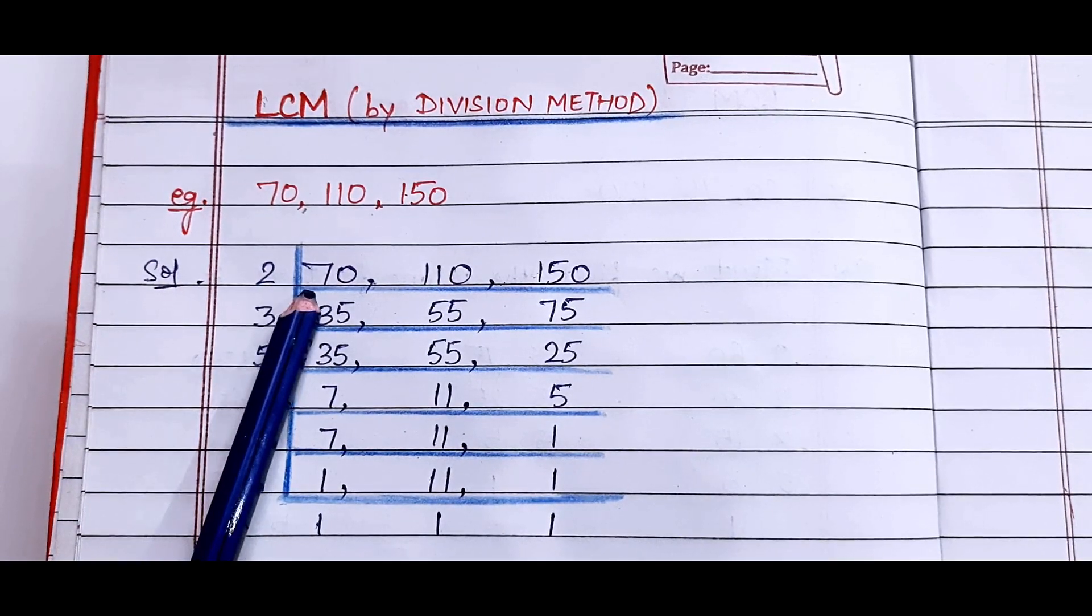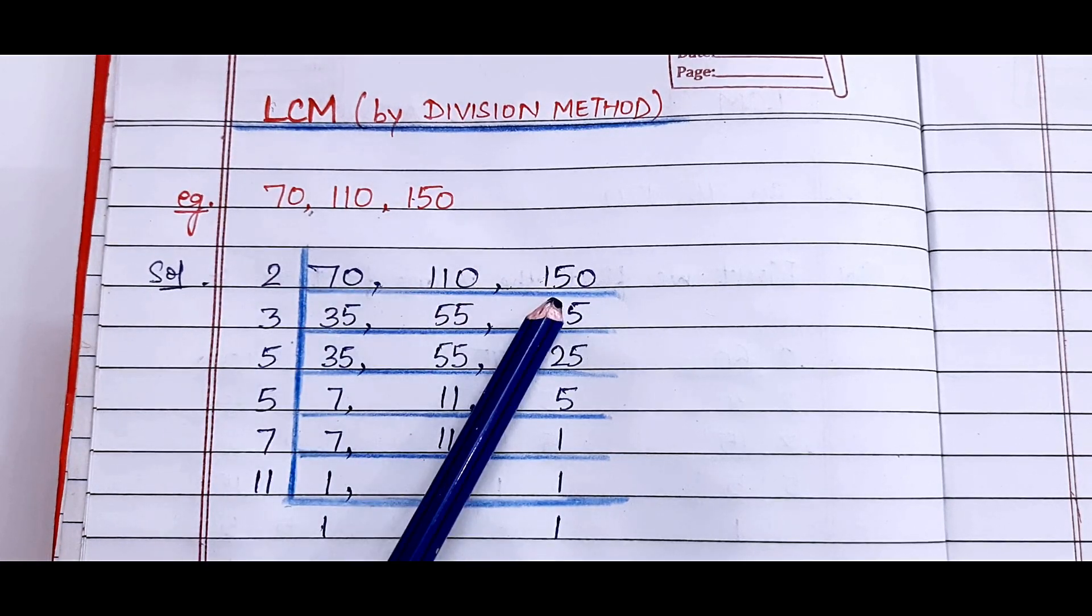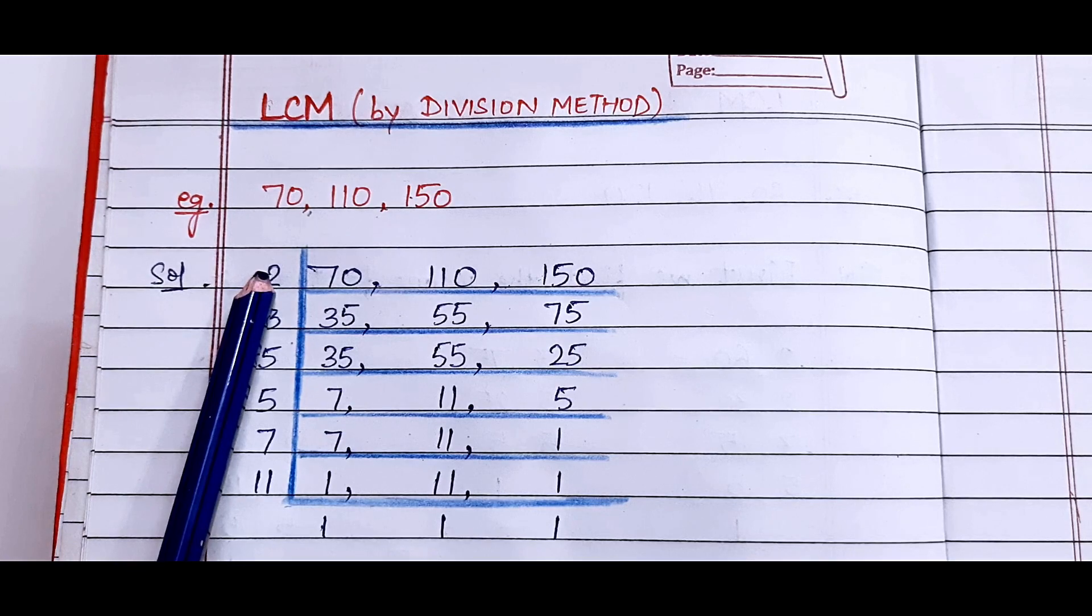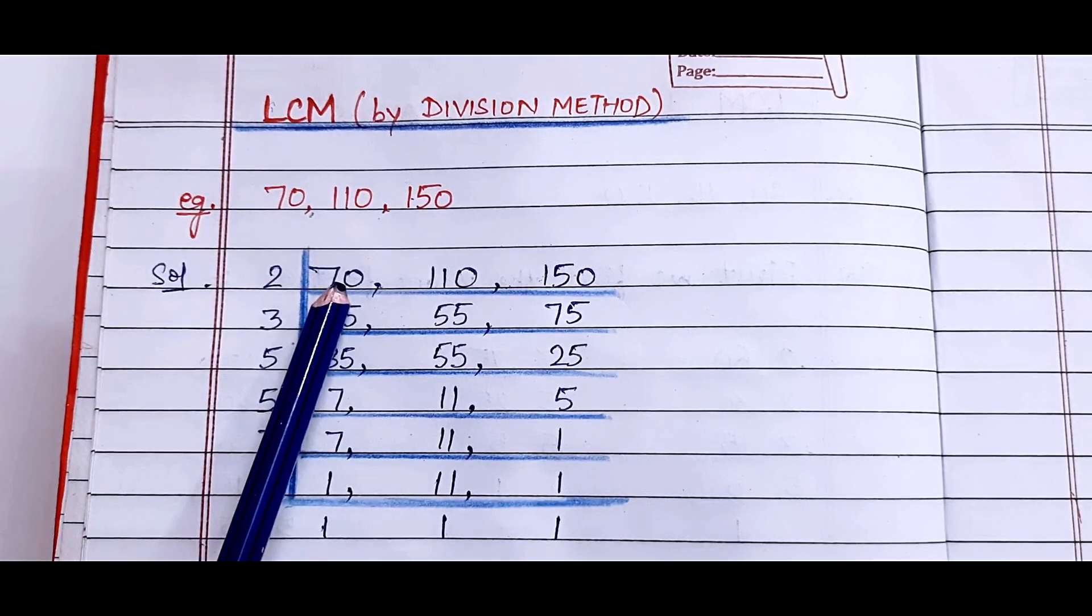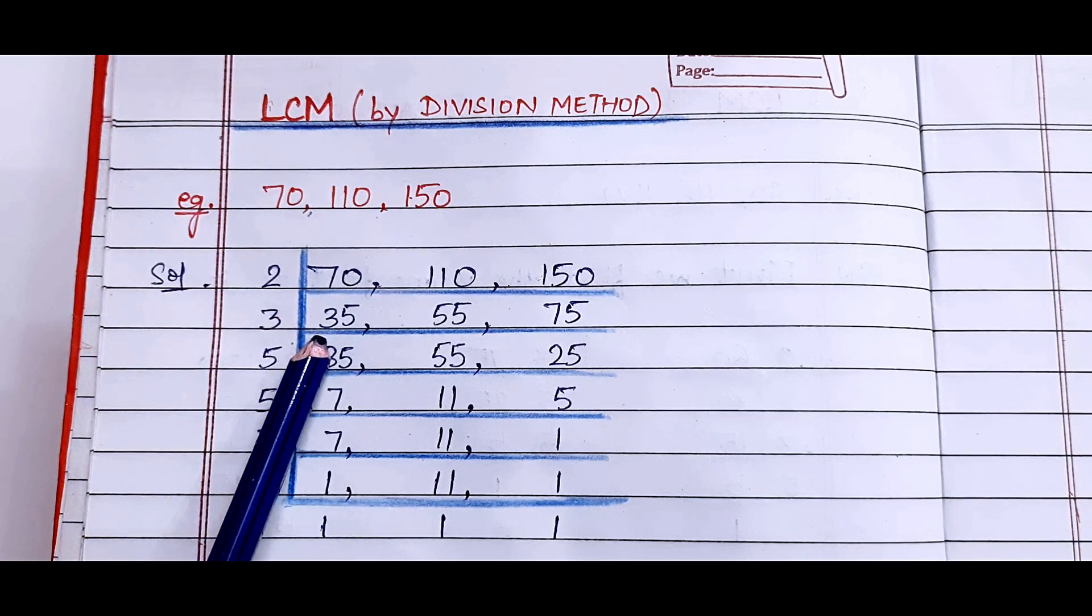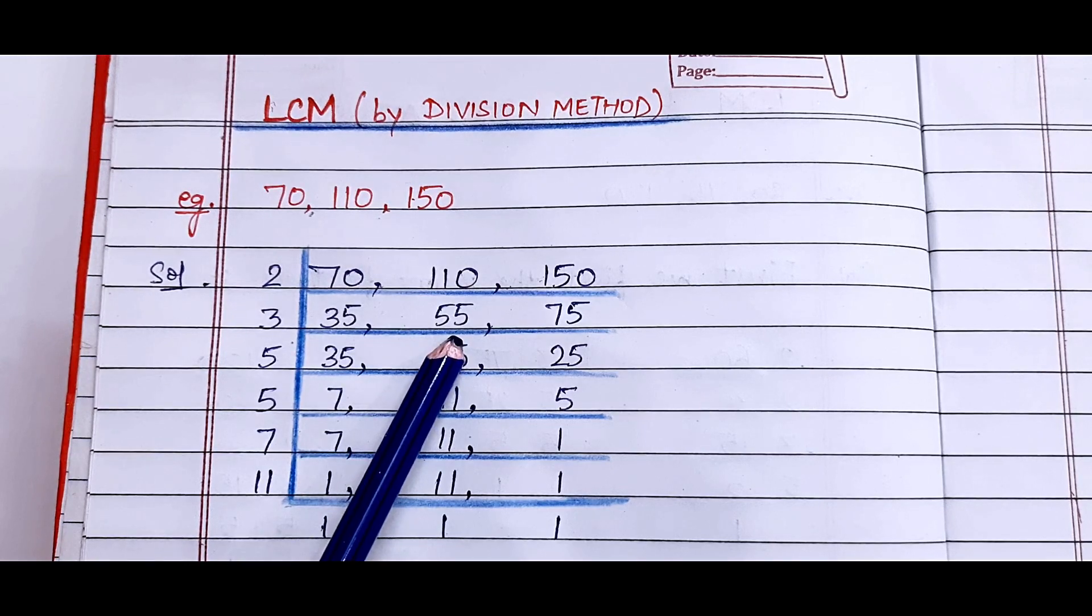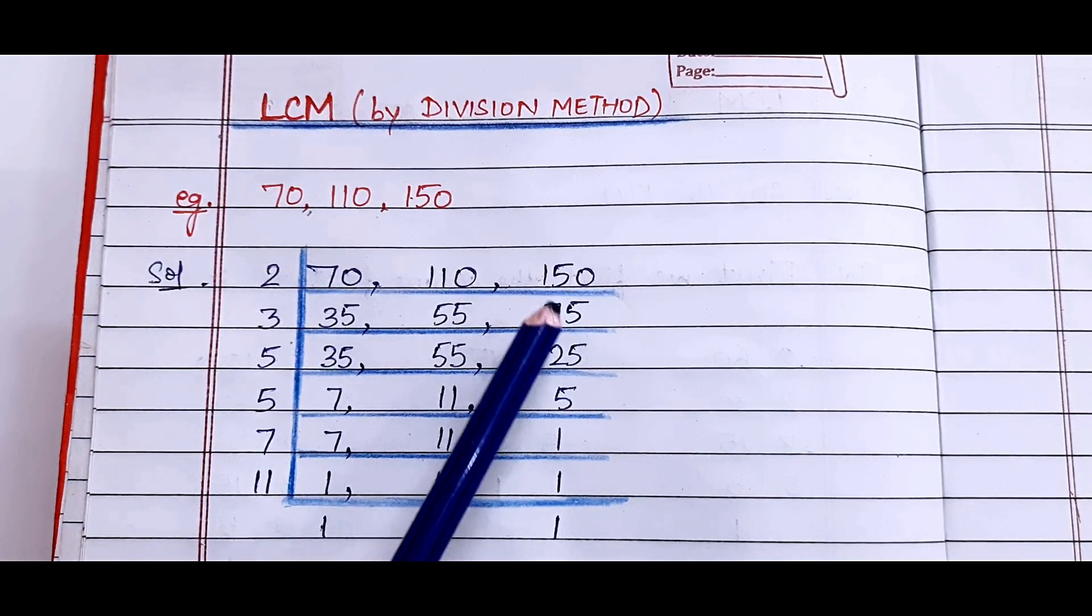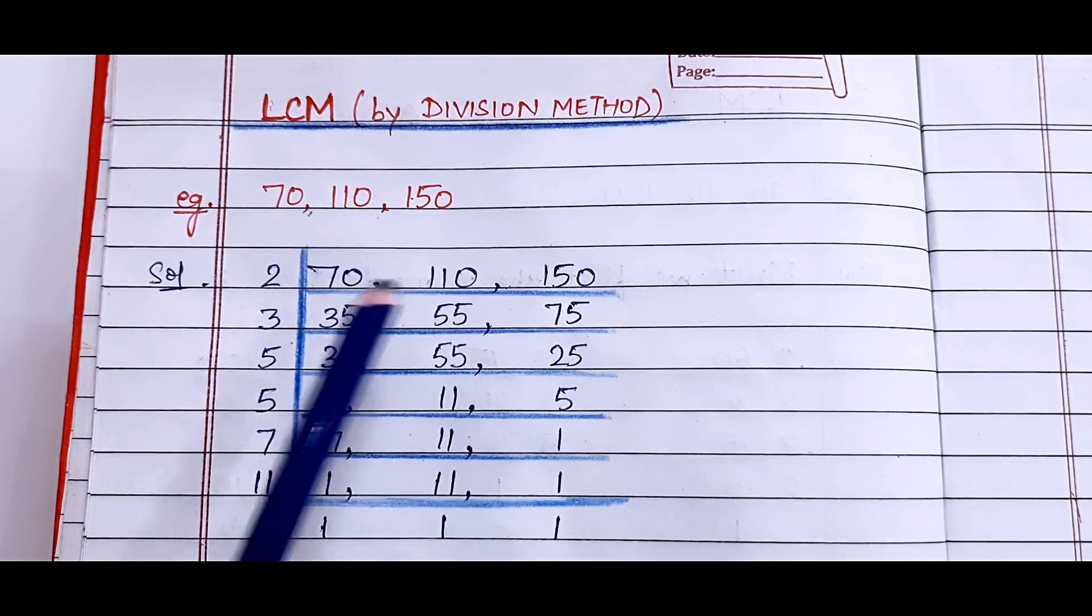First we will write 70, 110 and 150 in this way. Now we will solve it. The smallest prime number is 2, so we will write 2. It is divisible by 2, 35 times, so I have written 35. This is also divisible 55 times, so I have written 55. This number is also even, so it is also divisible by 2, 75 times. Clear?